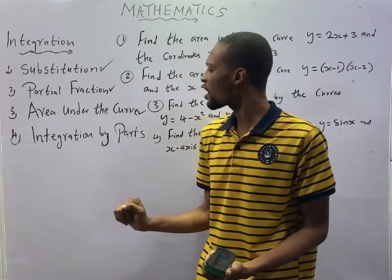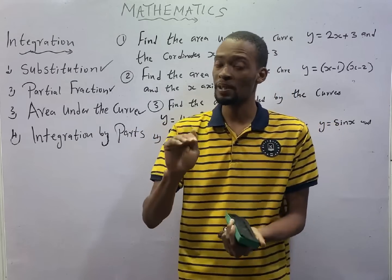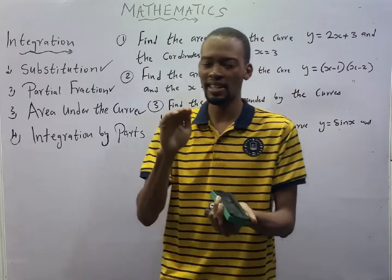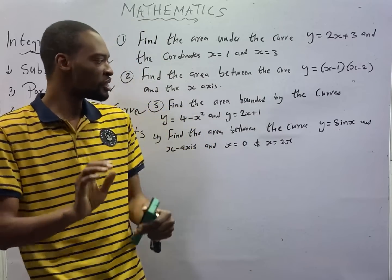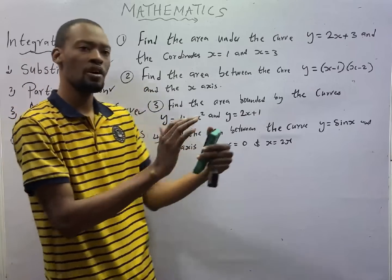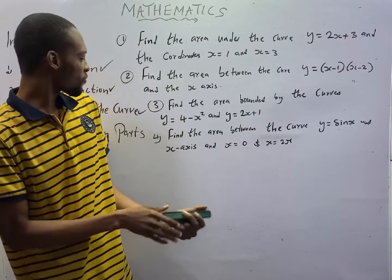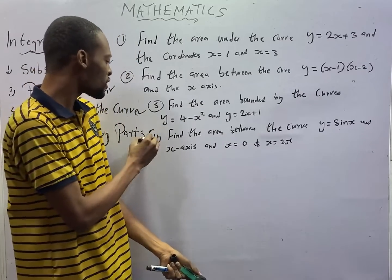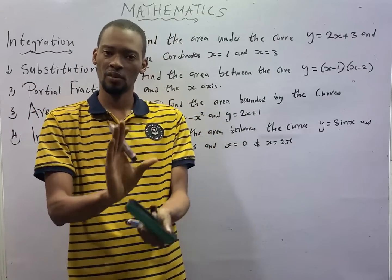JAMB is concerned about area under the curve when it comes to application of integration. Not just area, JAMB stated clearly that simple cases only. Meaning, don't go to the complex parts of finding area bounded by curves. Now, the first question here represents what JAMB expects you to know when it comes to finding area under curves.